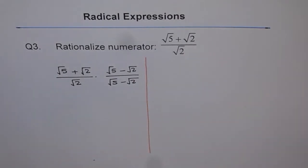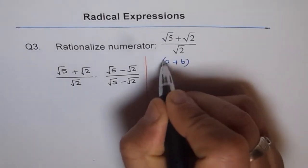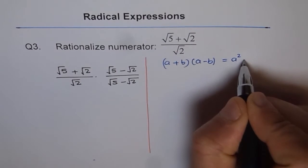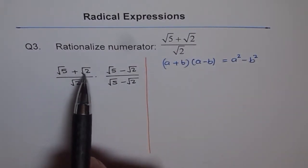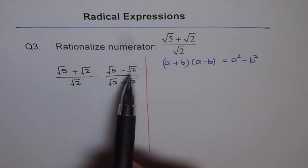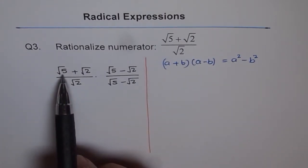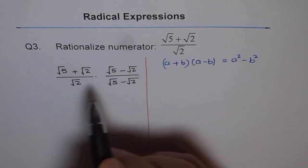Most of you know the formula: a plus b times a minus b equals a squared minus b squared. Here we have an expression which is a plus b, where a is square root 5 and b is square root 2, times a minus b, and we should get a squared minus b squared. So square of square root 5 is 5, and square of square root 2 is 2, giving us 5 minus 2.